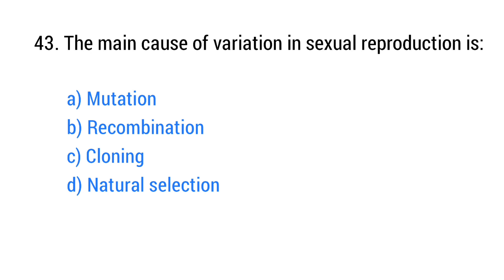Question number 43. The main cause of variation in sexual reproduction is? The right answer is option B: Recombination.